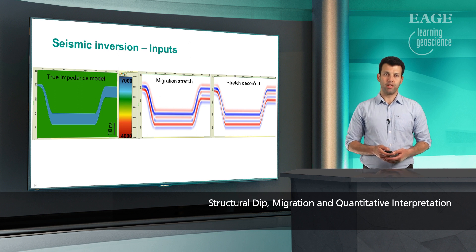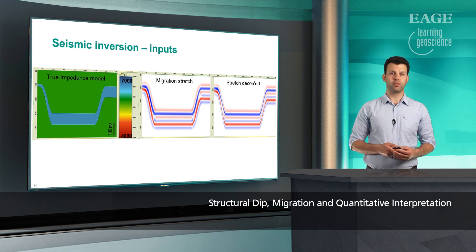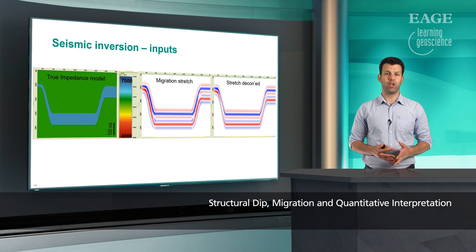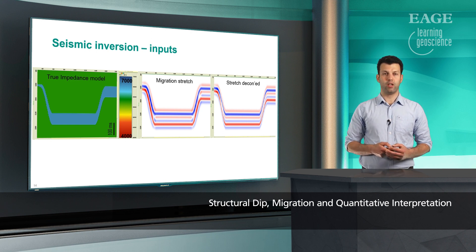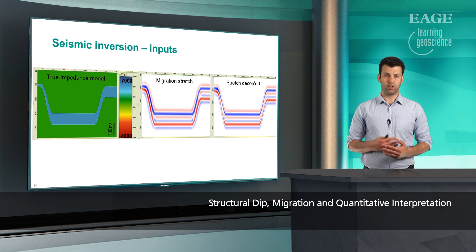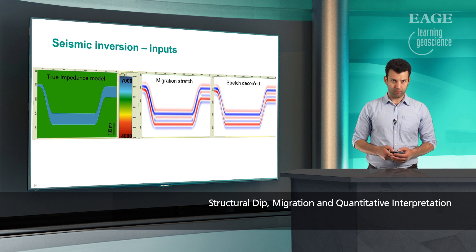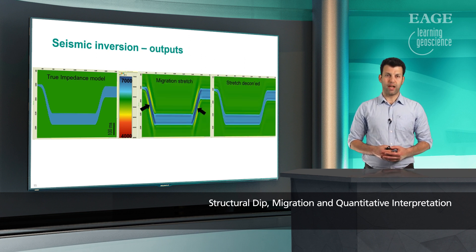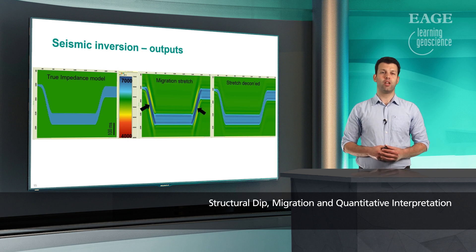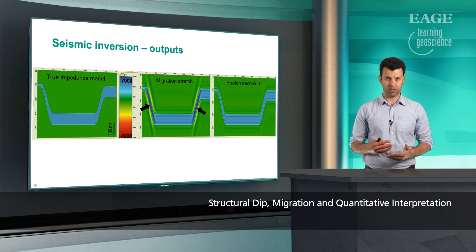To give you a better idea, some examples. On the left-hand side, we have the true impedance model. In the middle, we have a synthetic image that simulates the migration and a stretch over dipping events. And on the right-hand side, you can see what happens to that image once we deconvolve the stretch.